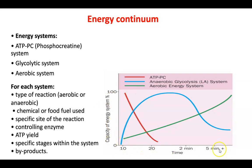On the diagram we have time on one axis and the capacity of the energy system in percentages on the other. From 0 to 10 seconds we predominantly use the ATP-PC system, as PC stores run out after approximately 10 seconds. From 10 seconds to 3 minutes we predominantly use the glycolytic system, and after 3 minutes we use the aerobic energy system for low to moderate intensity exercise from 3 minutes to approximately 5 hours.